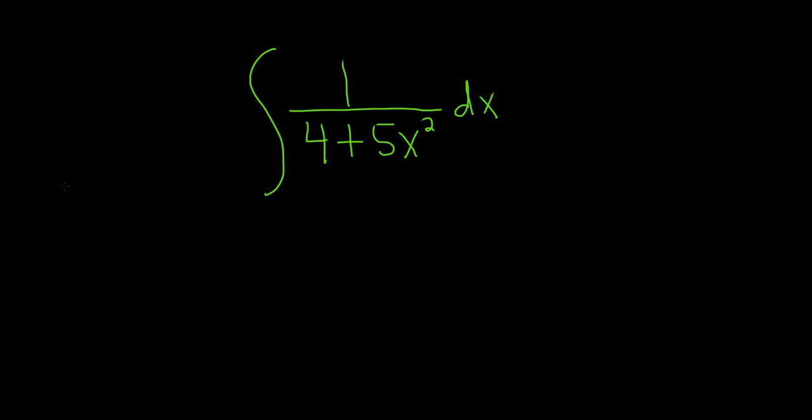So we have to evaluate this indefinite integral. The idea is to recognize this integral as something that fits the form for the following formula. If you have 1 over a squared plus x squared dx, this is equal to 1 over a times the arctangent of x over a plus our constant of integration, capital C.